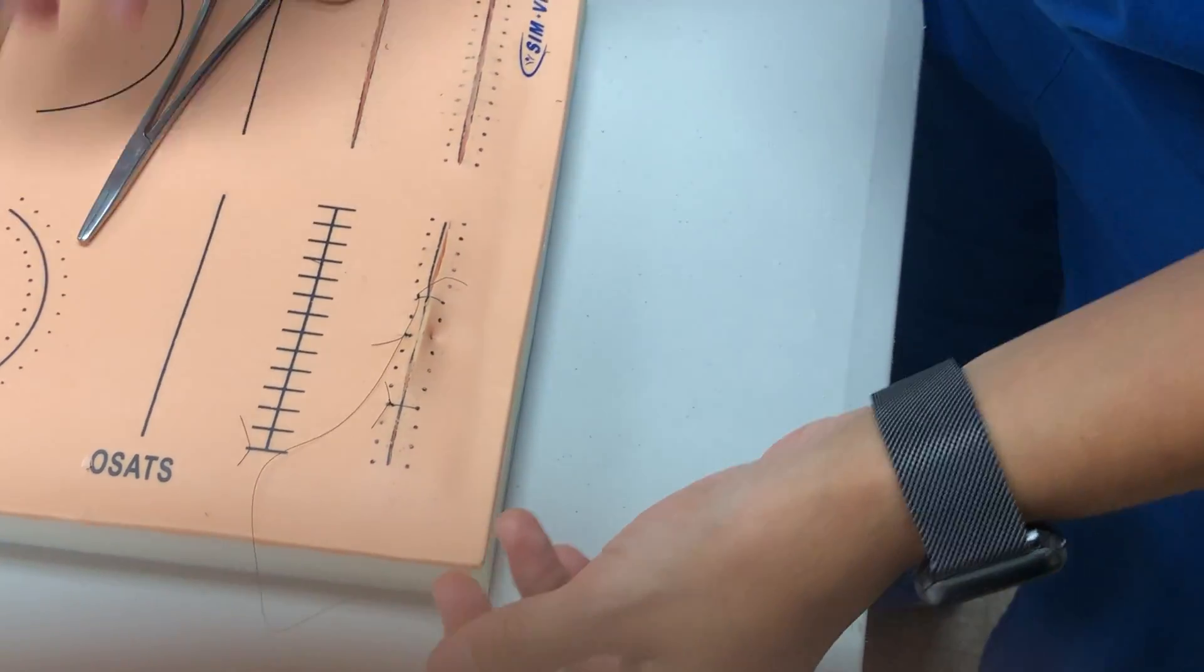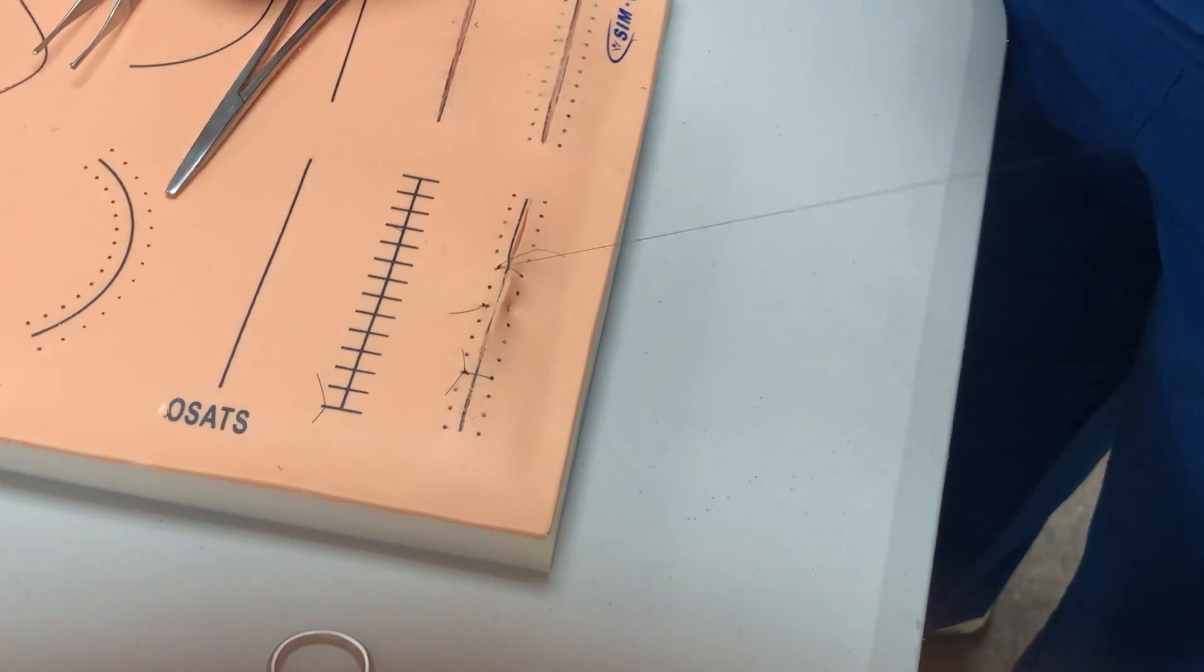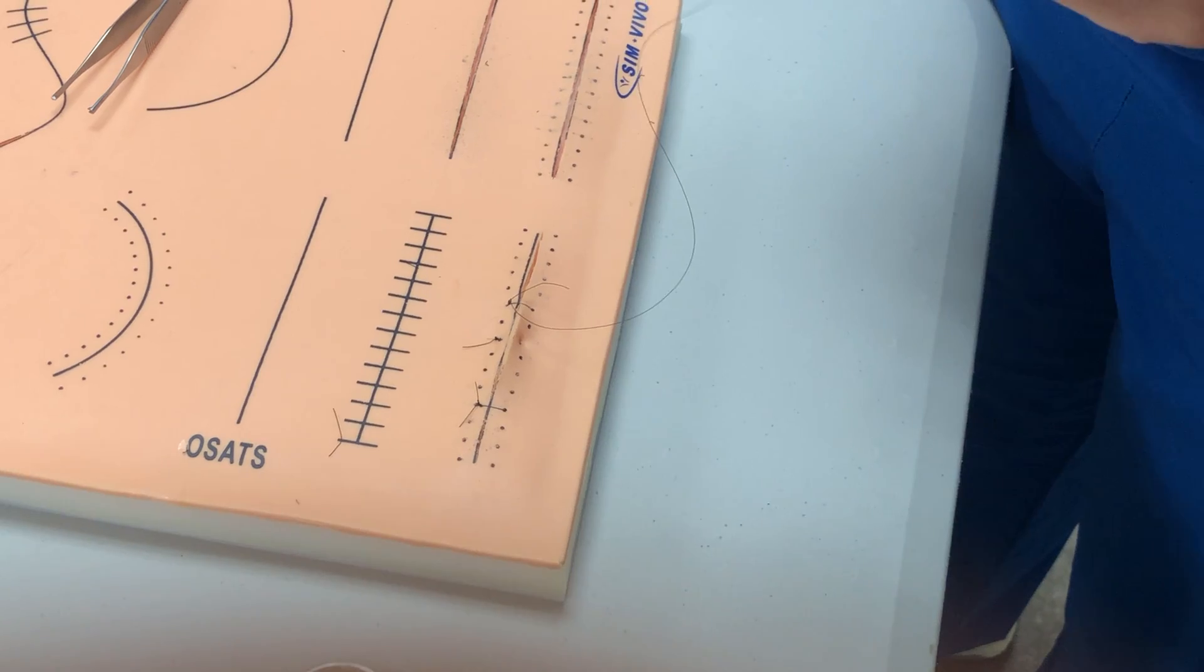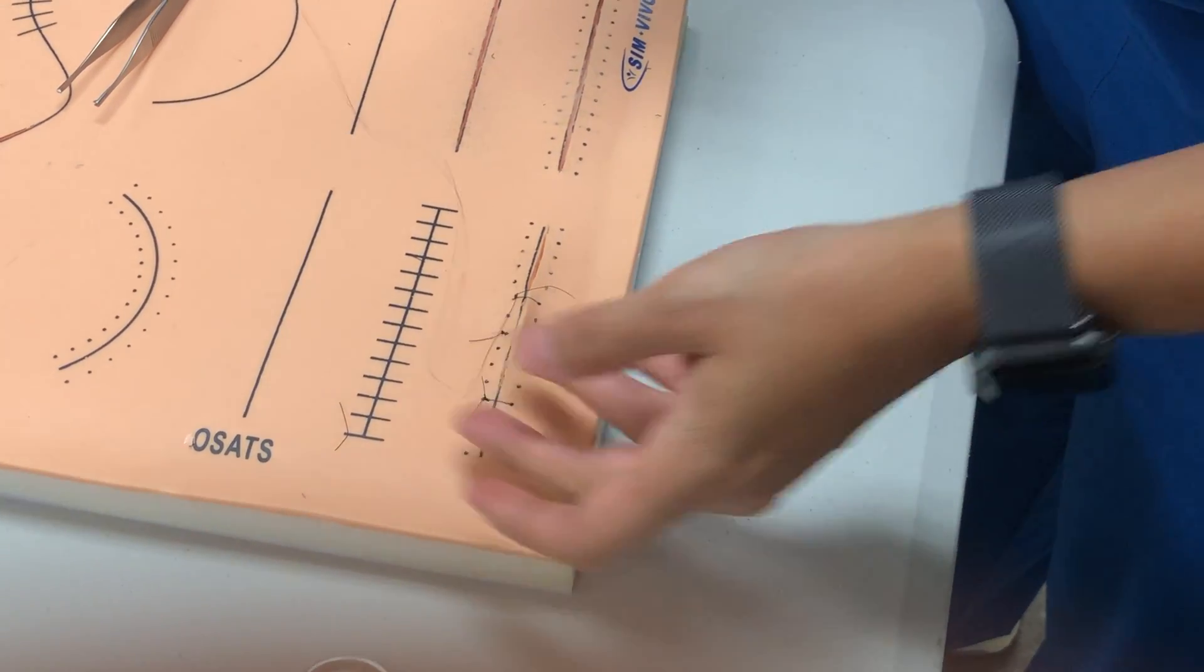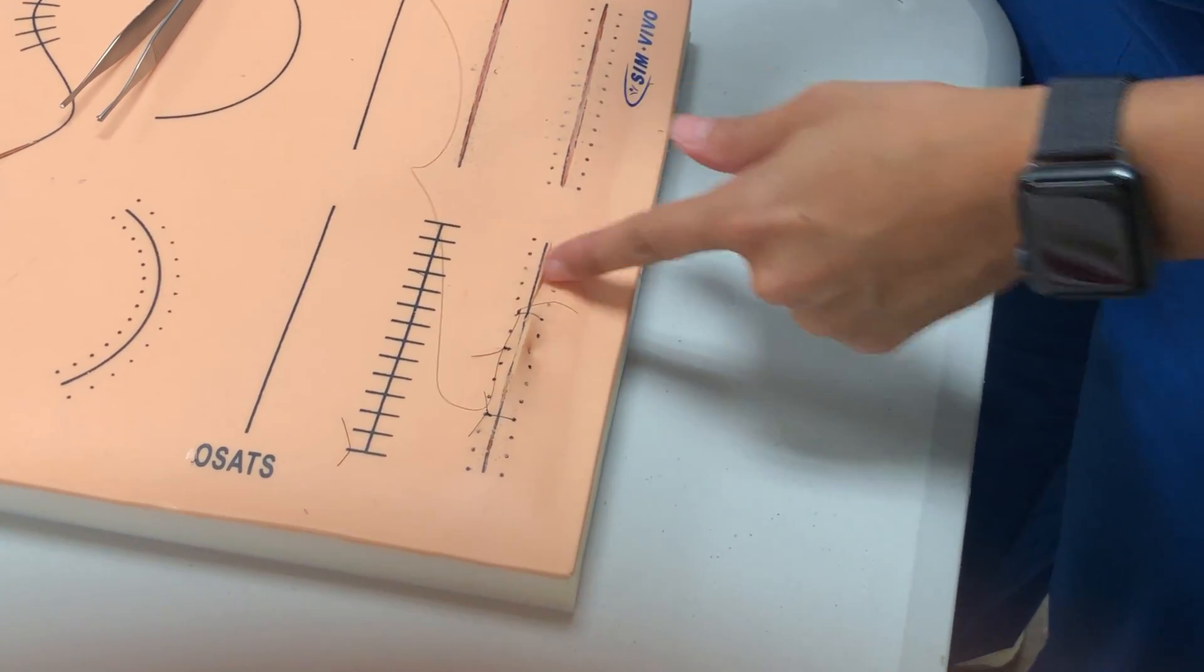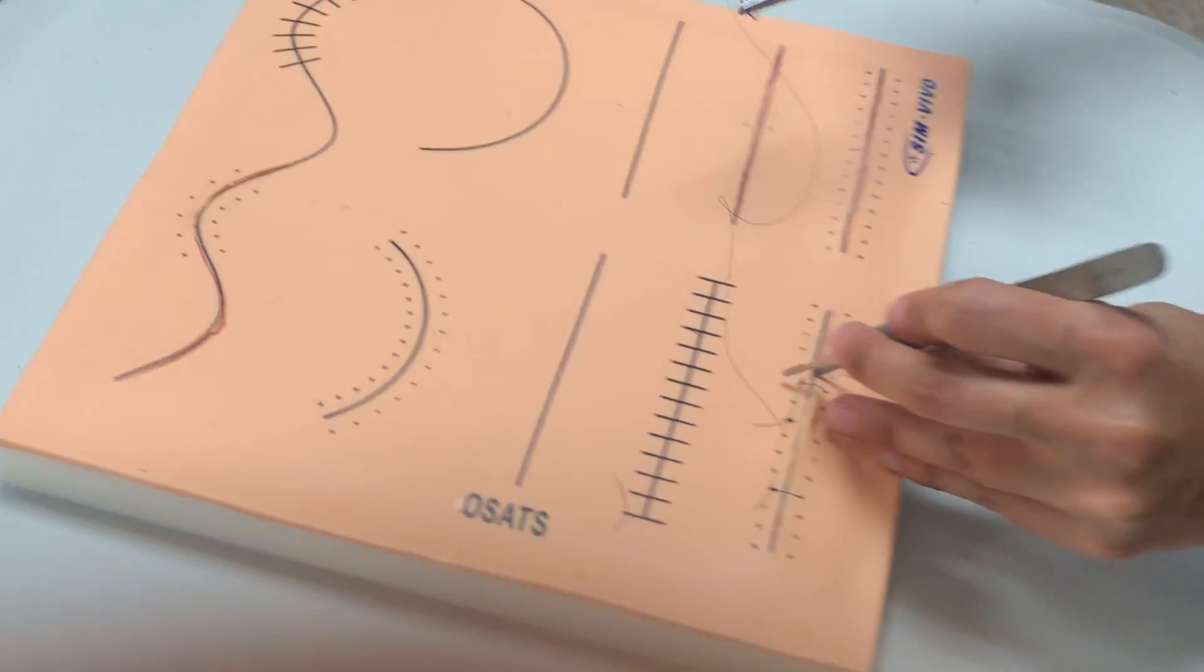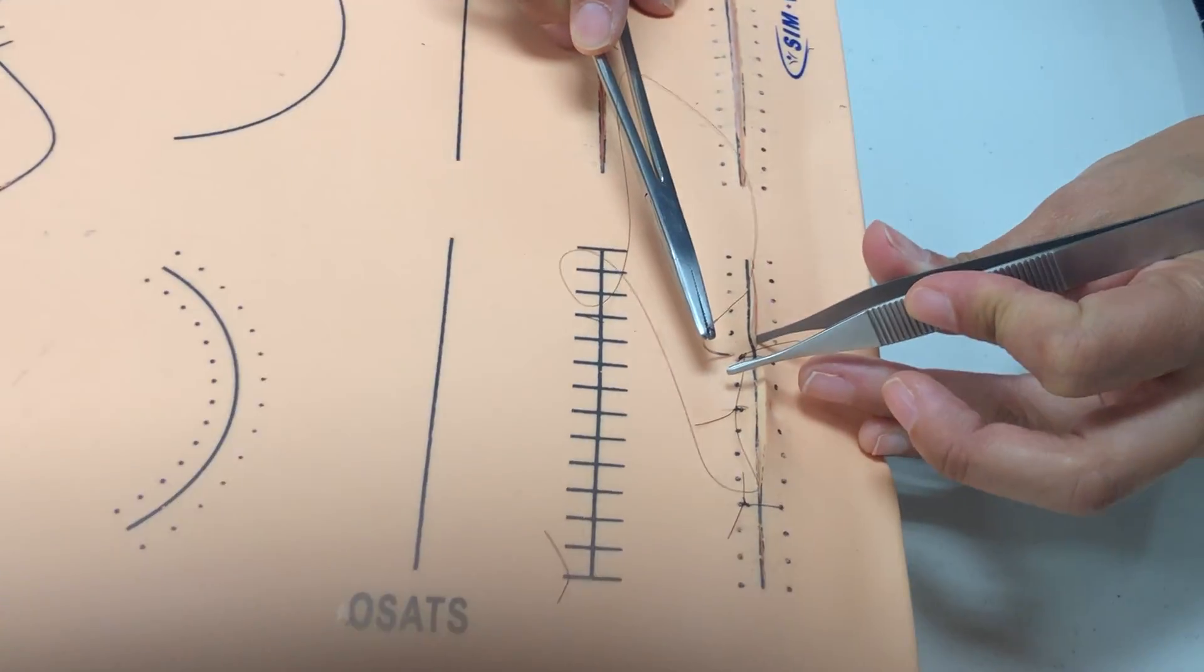Alright, so we're going to leave it like that. We're not going to cut it and now we're going to go underneath to kind of hide our knot so that we can have our stitches running parallel to each other. So when we go in on this one, we're going to go in right next to the knot.